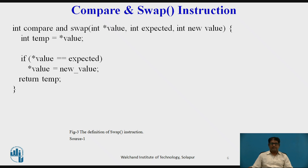Mutual exclusion can be provided using a global variable declared as a lock, initialized to zero. The first process that invokes compare-and-swap will set lock to one and then enter its critical section, because the original value of the lock was equal to the expected value of zero. Subsequent calls to compare-and-swap will not succeed because the lock is no longer equal to the expected value of zero.